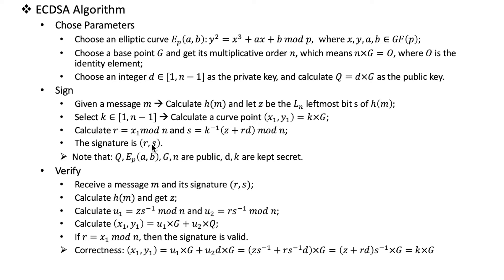Note that except for the public key, the random value K is also kept secret. The sender can then send the message together with this signature to the receiver.